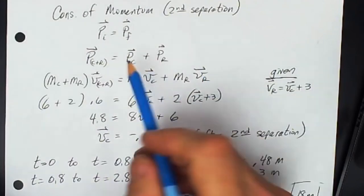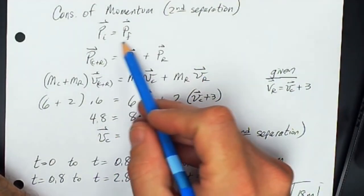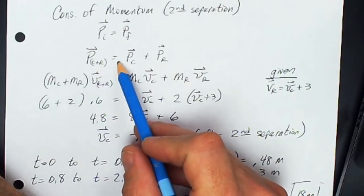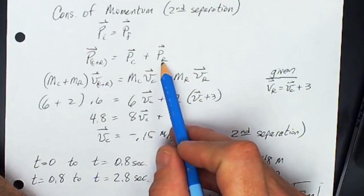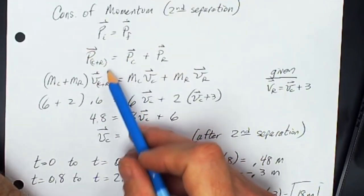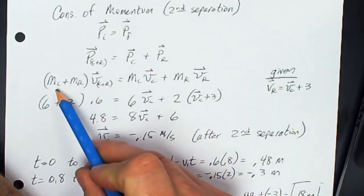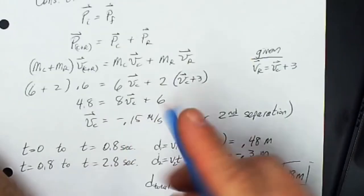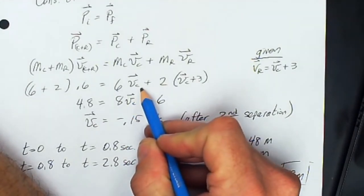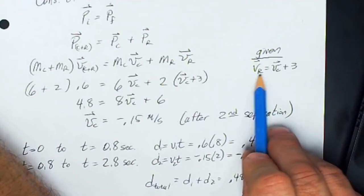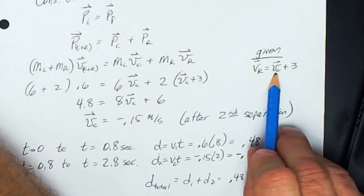In the second separation, momentum is again conserved because only internal forces act. The momentum of the center and right piece together before separation equals the sum of their momenta after separation. Now the initial momentum is not zero — it's the mass of C plus R times 0.6 meters per second — and this equals mass of C times its velocity plus mass of R times its velocity with respect to the track.